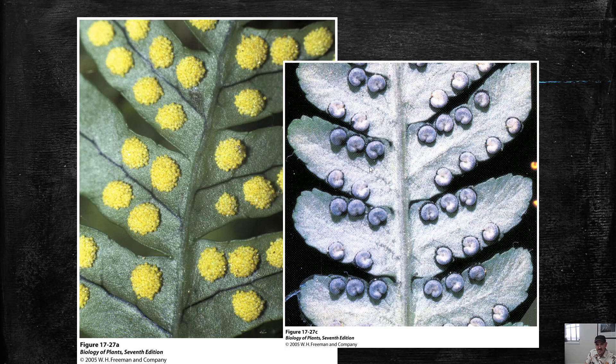Here's another example of the bottom of a fern leaf. In this case, the sporangia have a protective covering over them that protect them from the environment. That's why they look a little different than over here.